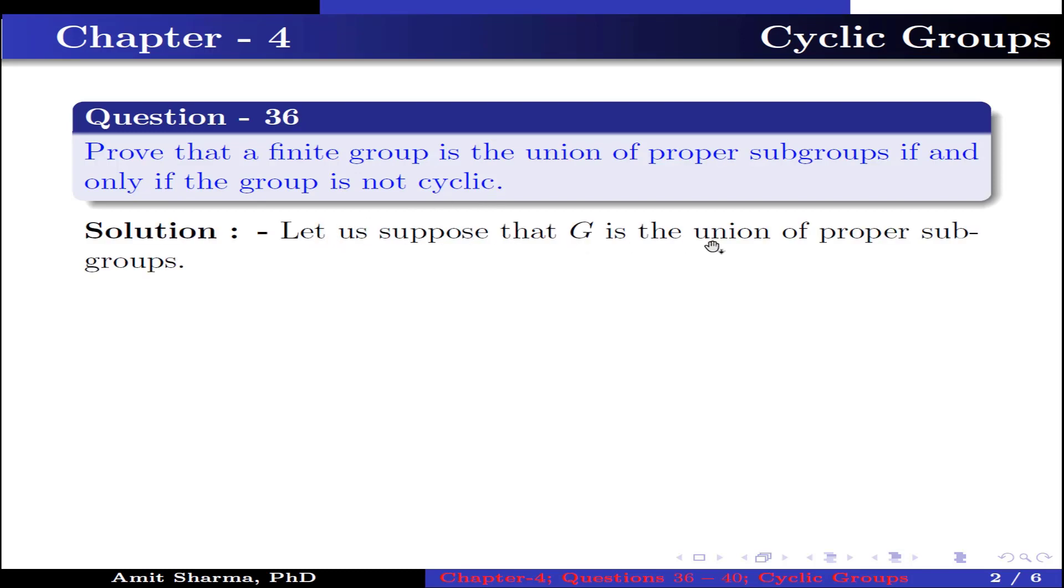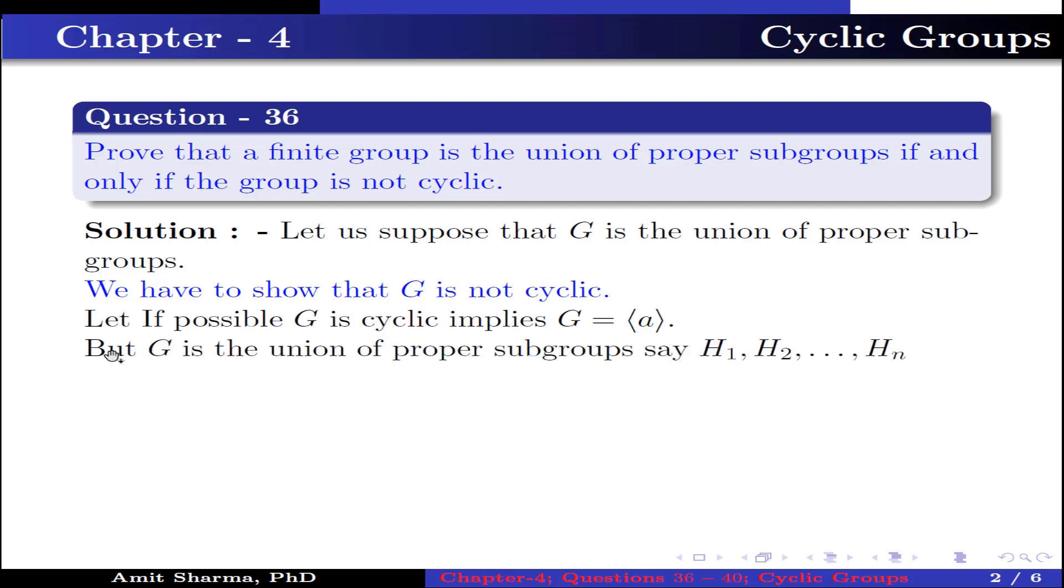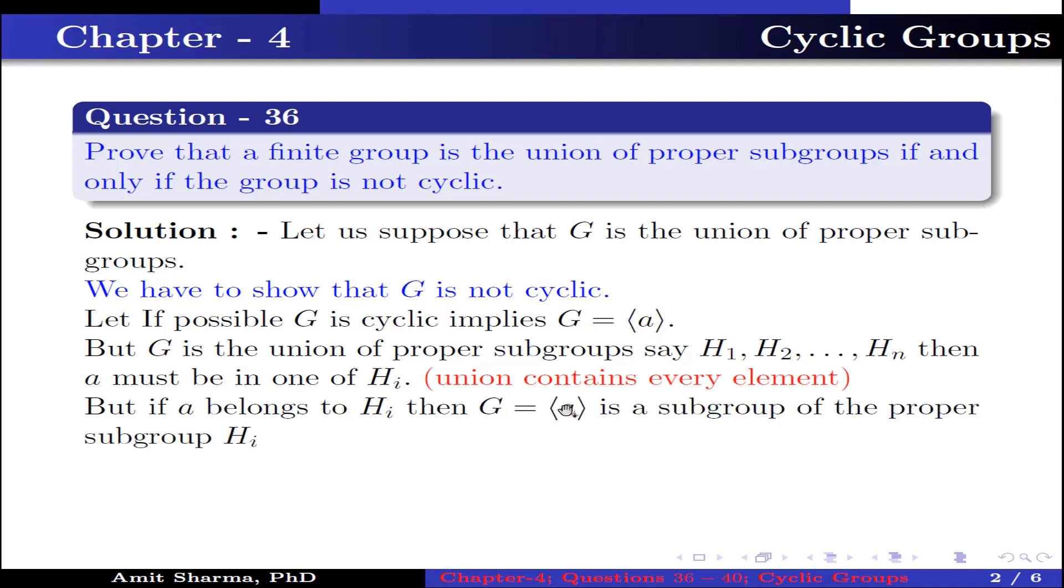Let us suppose that G is the union of proper subgroups. We have to show that G is not cyclic. Let, if possible, G is cyclic. This implies G is generated by element a. But G is the union of proper subgroups, say H₁, H₂, up to Hₙ. Then a must be in one of the Hᵢ because the union contains every element. But if a belongs to Hᵢ, then G, which is generated by a, is a subgroup of the proper subgroup Hᵢ, which is a contradiction. Thus G is not a cyclic group.